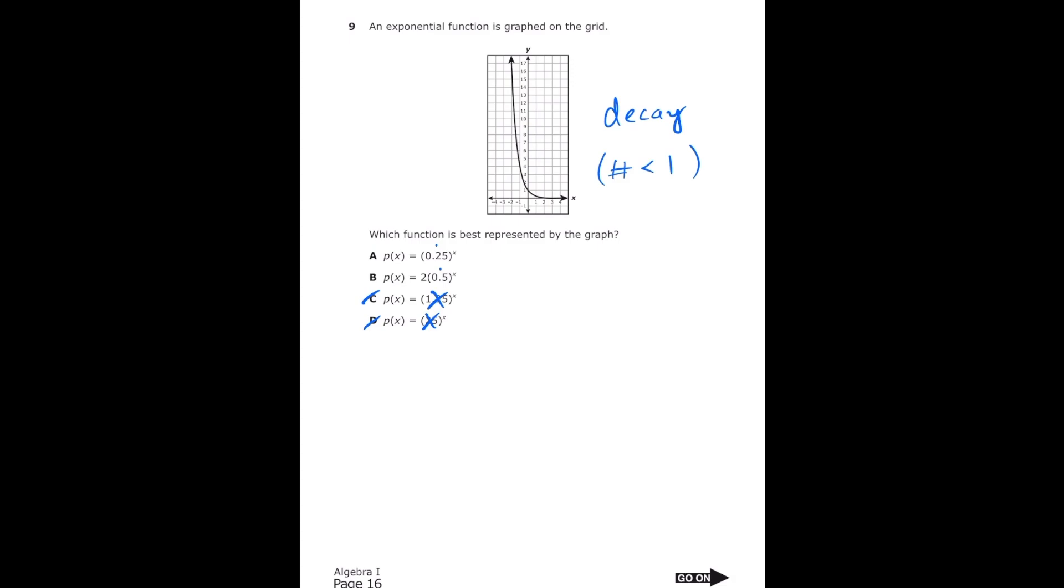Now, the way I'm going to decide between letter A and B is I'm going to find a point on my graph. So the easiest one to find is (0,1), the y-intercept. And I'm going to plug in my x value to my answer choice and see if it gives me the correct y value. So starting with letter A, I'm going to do 0.25 raised to the power of 0. And obviously anything raised to the power of 0 is just equal to 1, which is the correct y value. So I know that letter A is going to be correct.